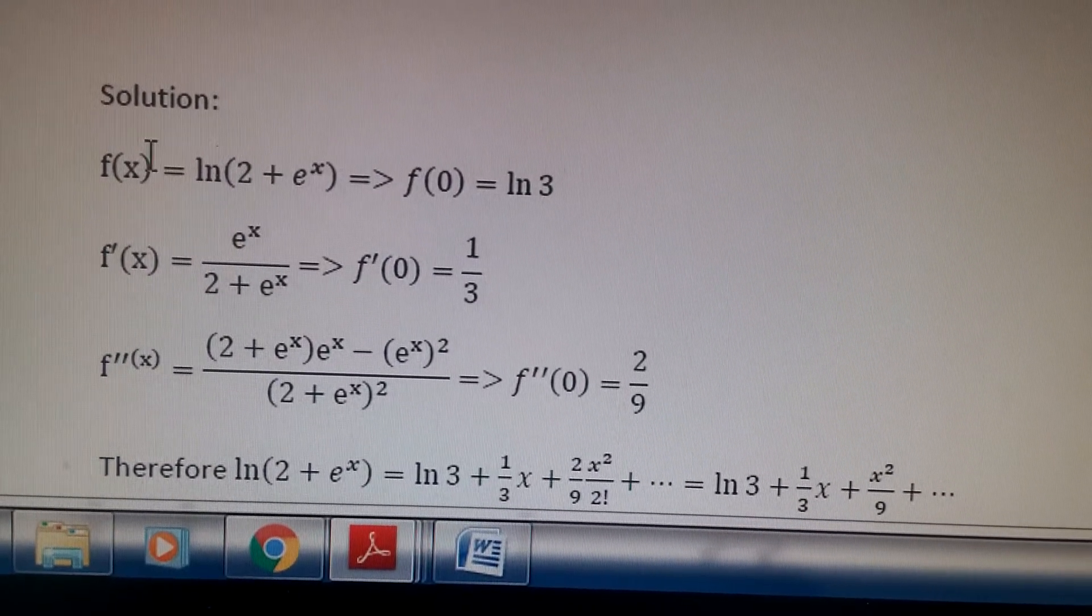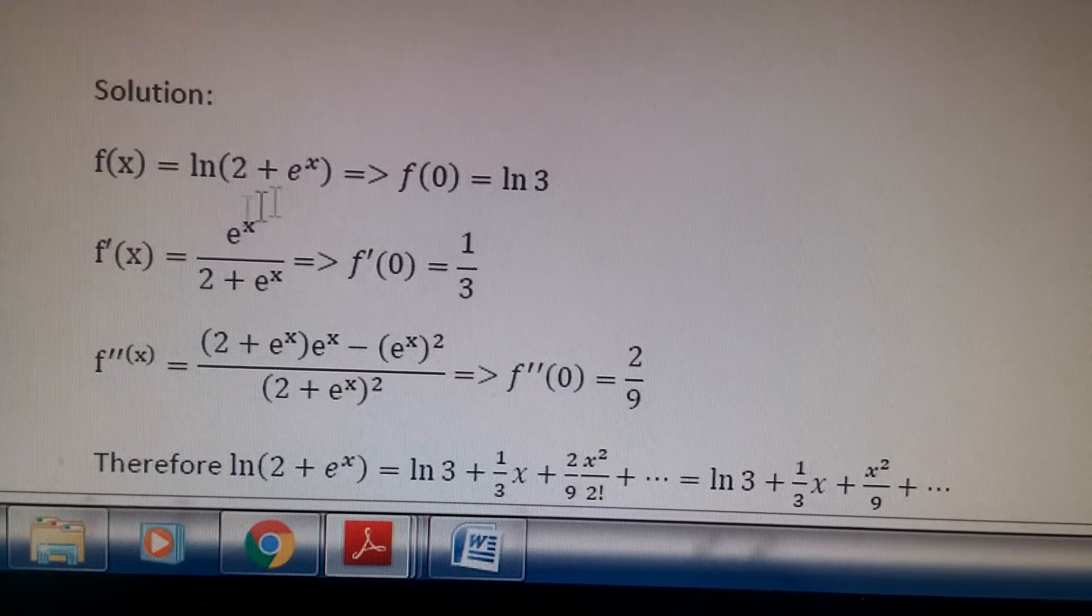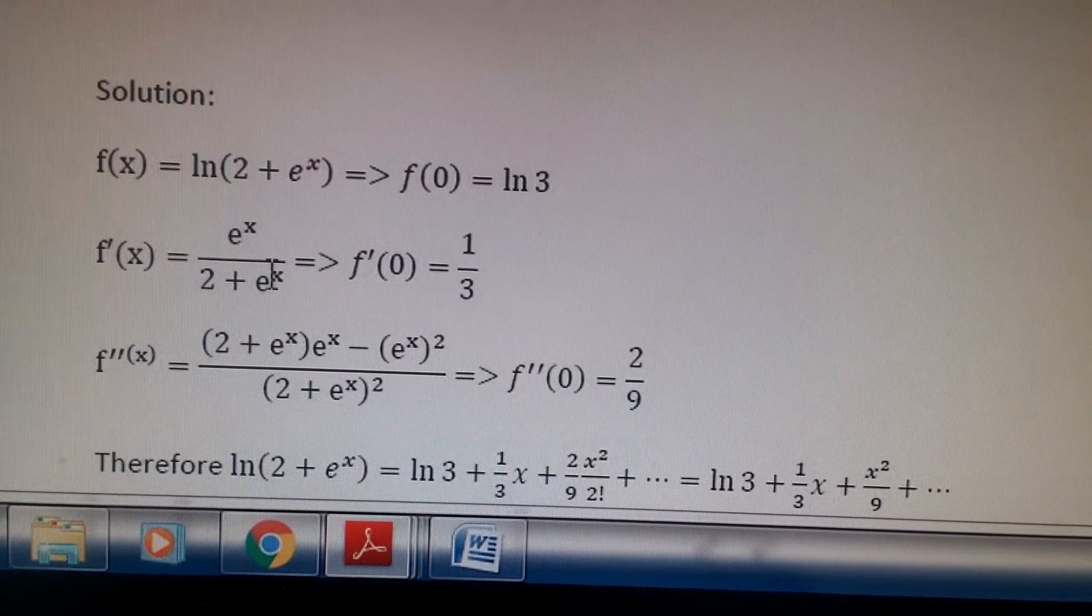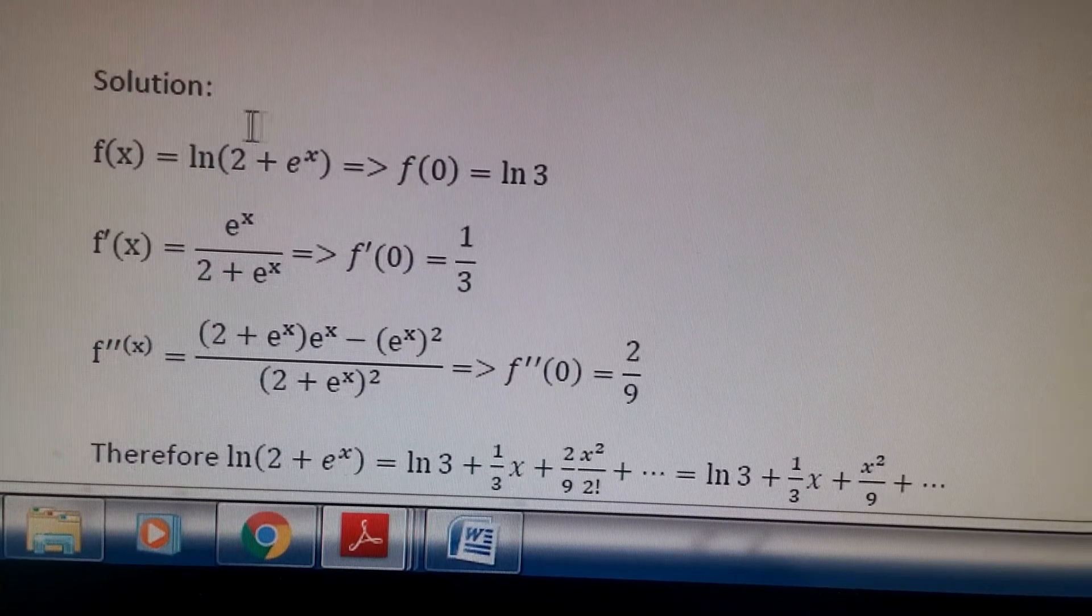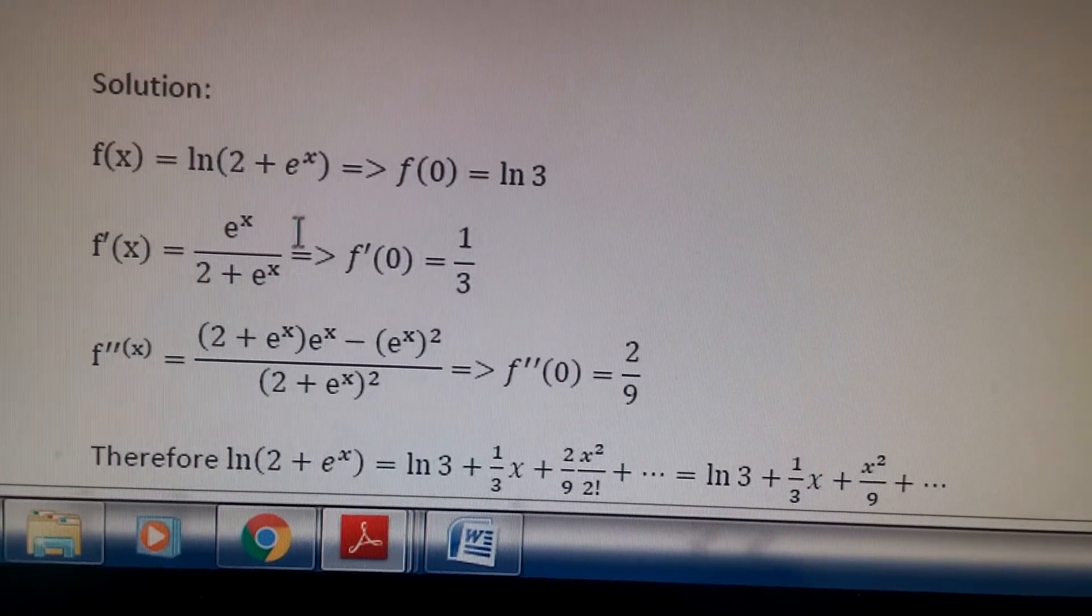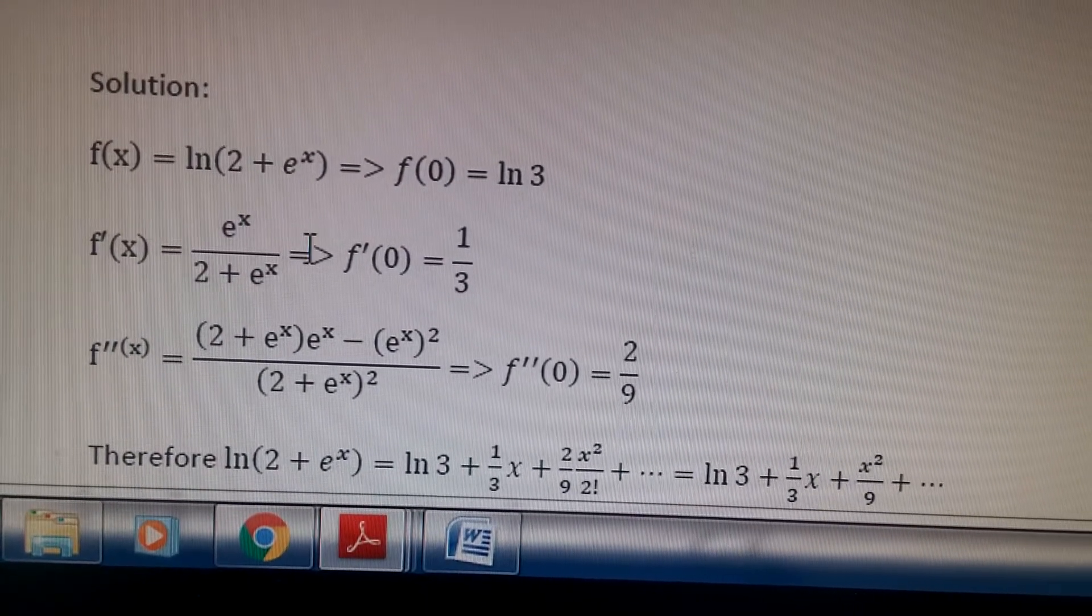Take the first derivative. You apply the rules: 1 over what's inside, 2 plus e to the x, and then take the derivative of what's inside, applying the chain rule, and put that in the numerator. Plug in 0 and you should get this as well.